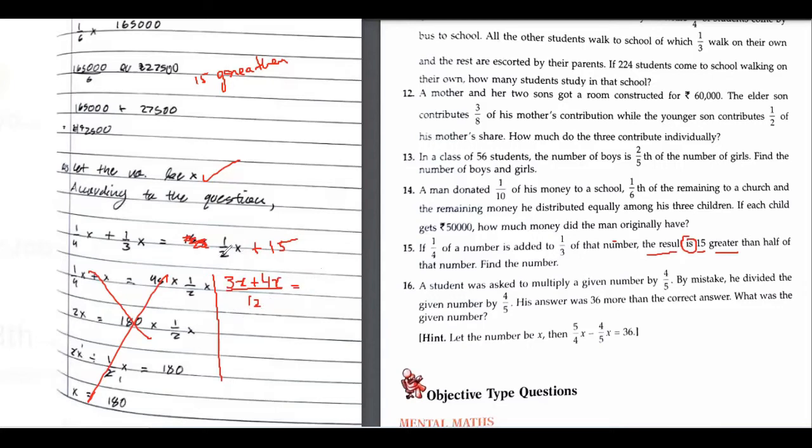In the next step, first of all, 1 by 2x plus 15. This is 7x upon 12. Can you hear me? After this, what have we done?